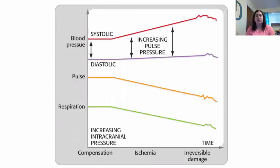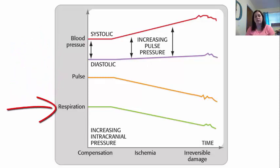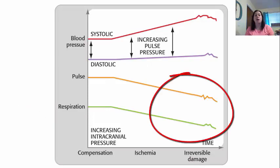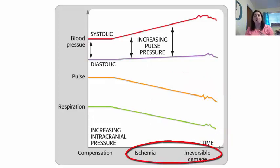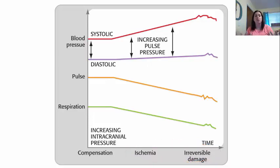You can see that as intracranial pressure increases, blood pressure is going to start to increase with increasing pulse pressure, while the pulse will start to decrease and so will respiration over time. If this continues and the underlying cause isn't fixed, we will eventually see the heart rate continue to slow until it eventually stops, breathing will slow until it eventually stops, and ultimately that causes more brain damage. So we want to fix it relatively quickly to not overwork the heart and lungs and potentially cause more brain damage.